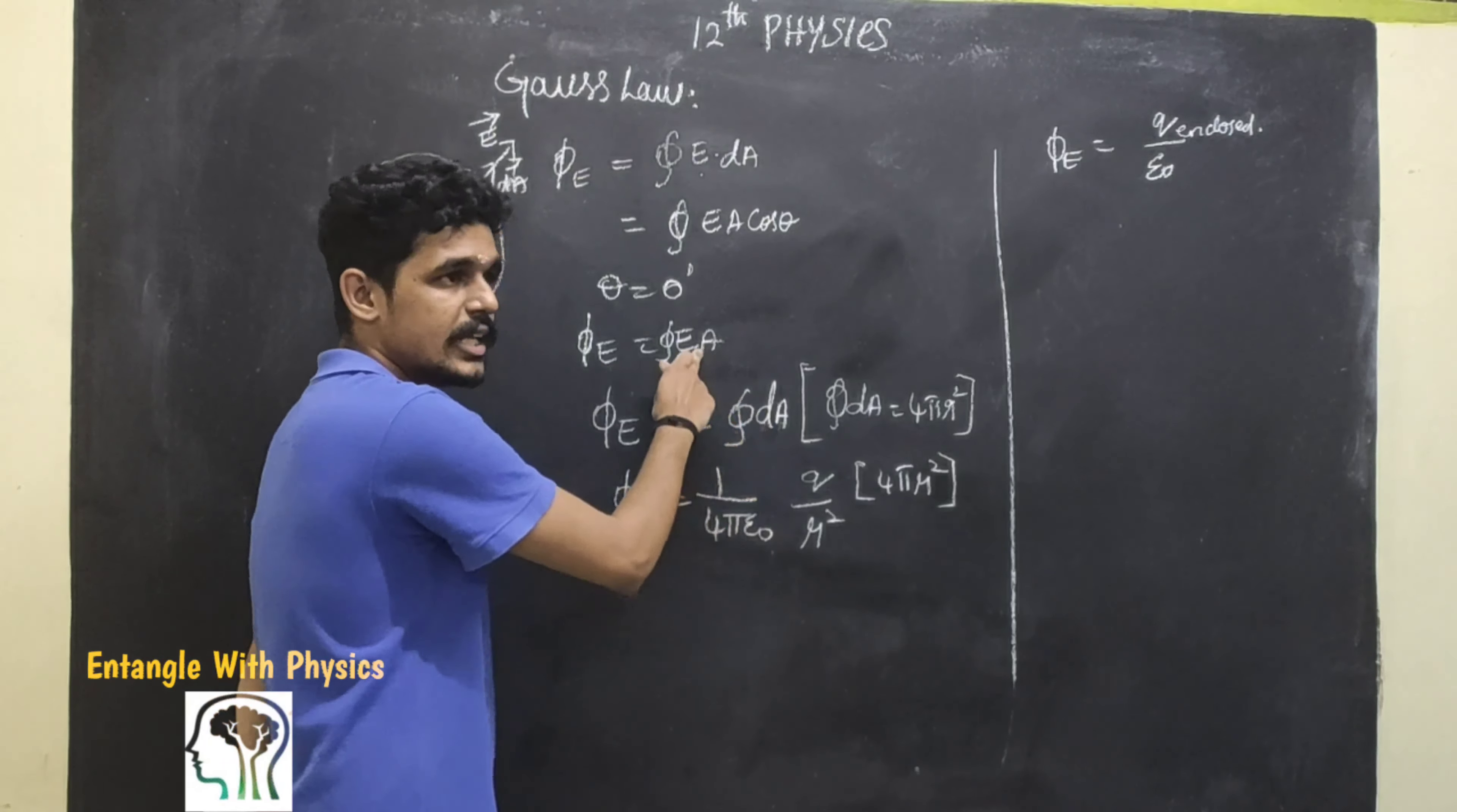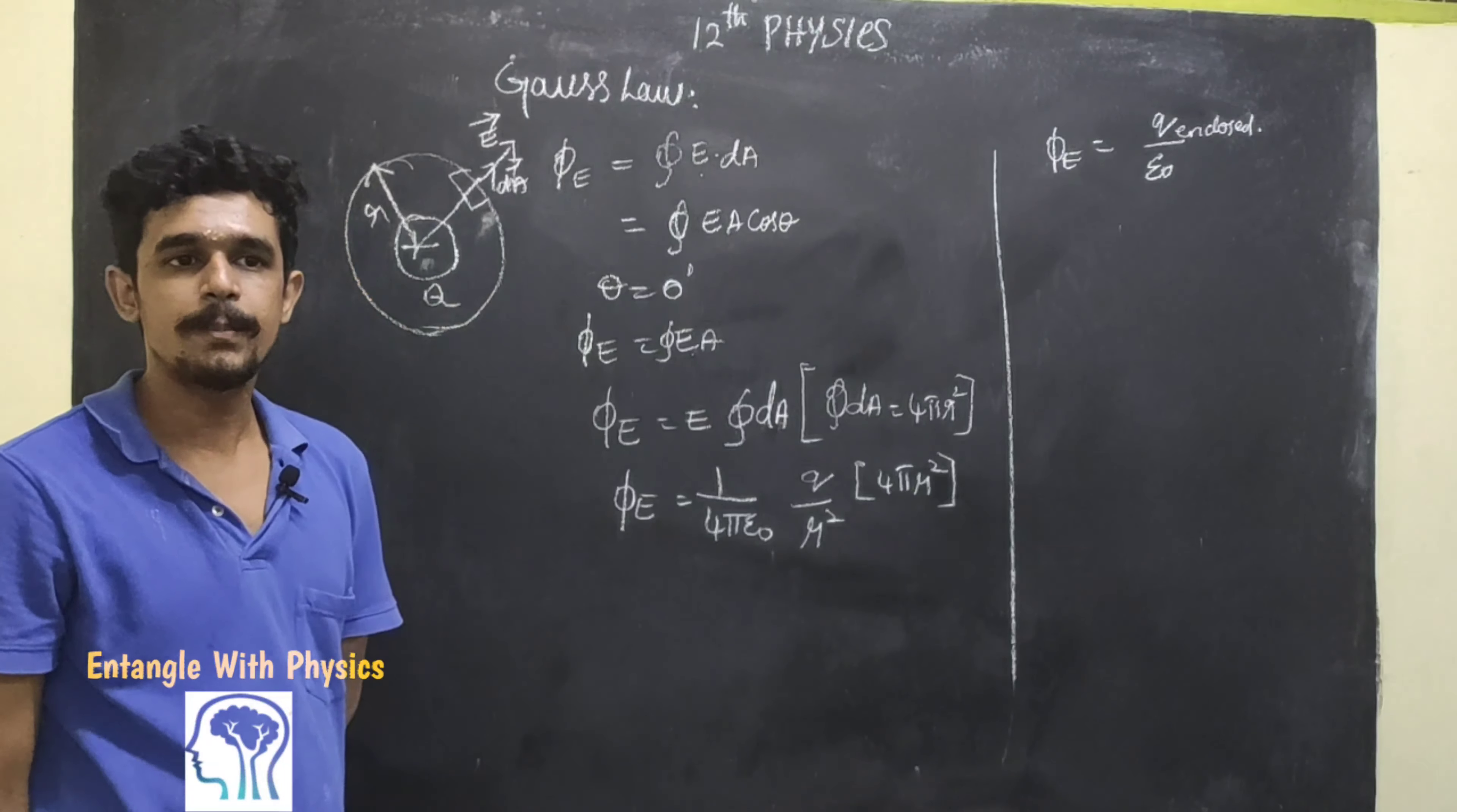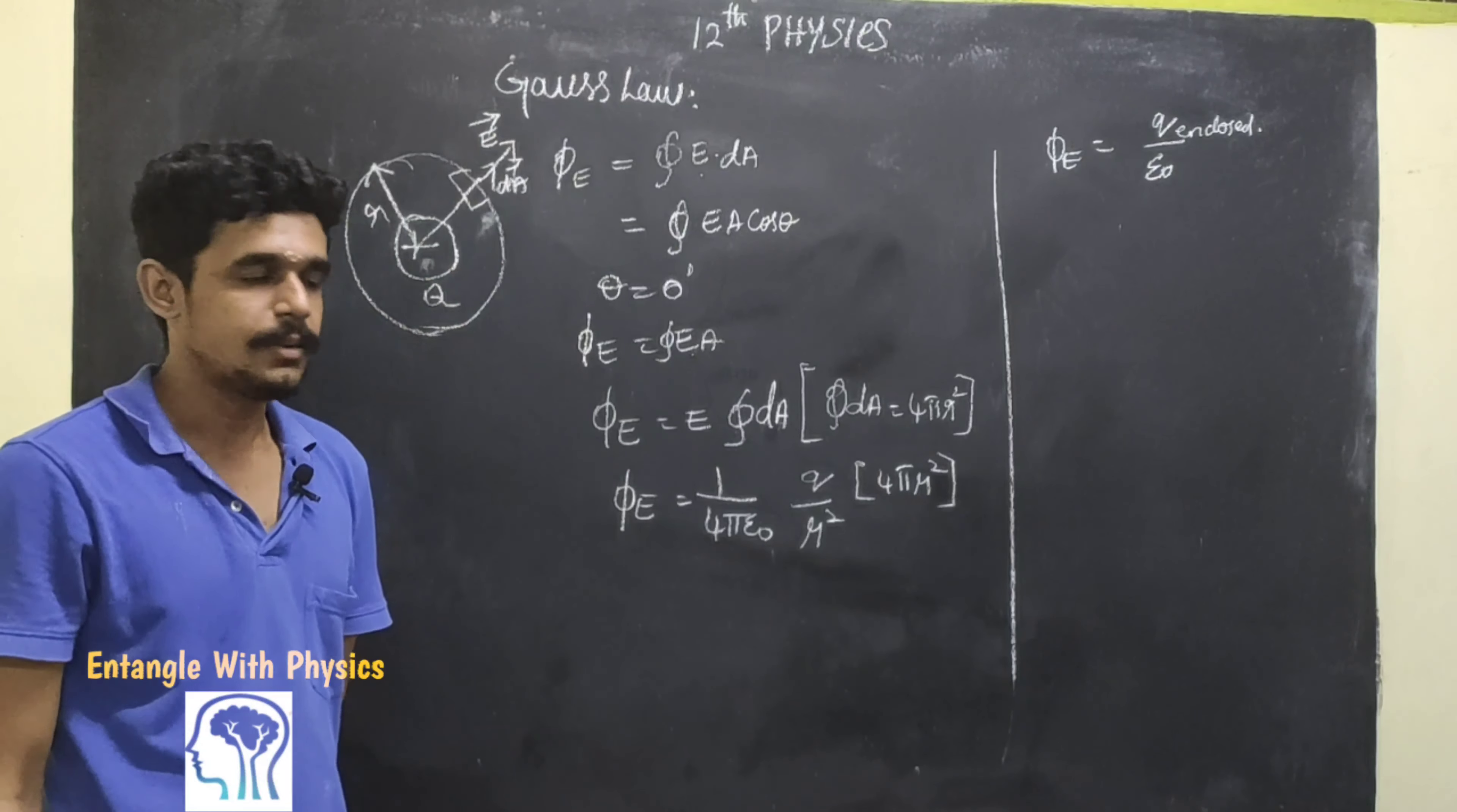If you take DA, DA is replaced by the area of the sphere, 4πR². So we have 4πR².